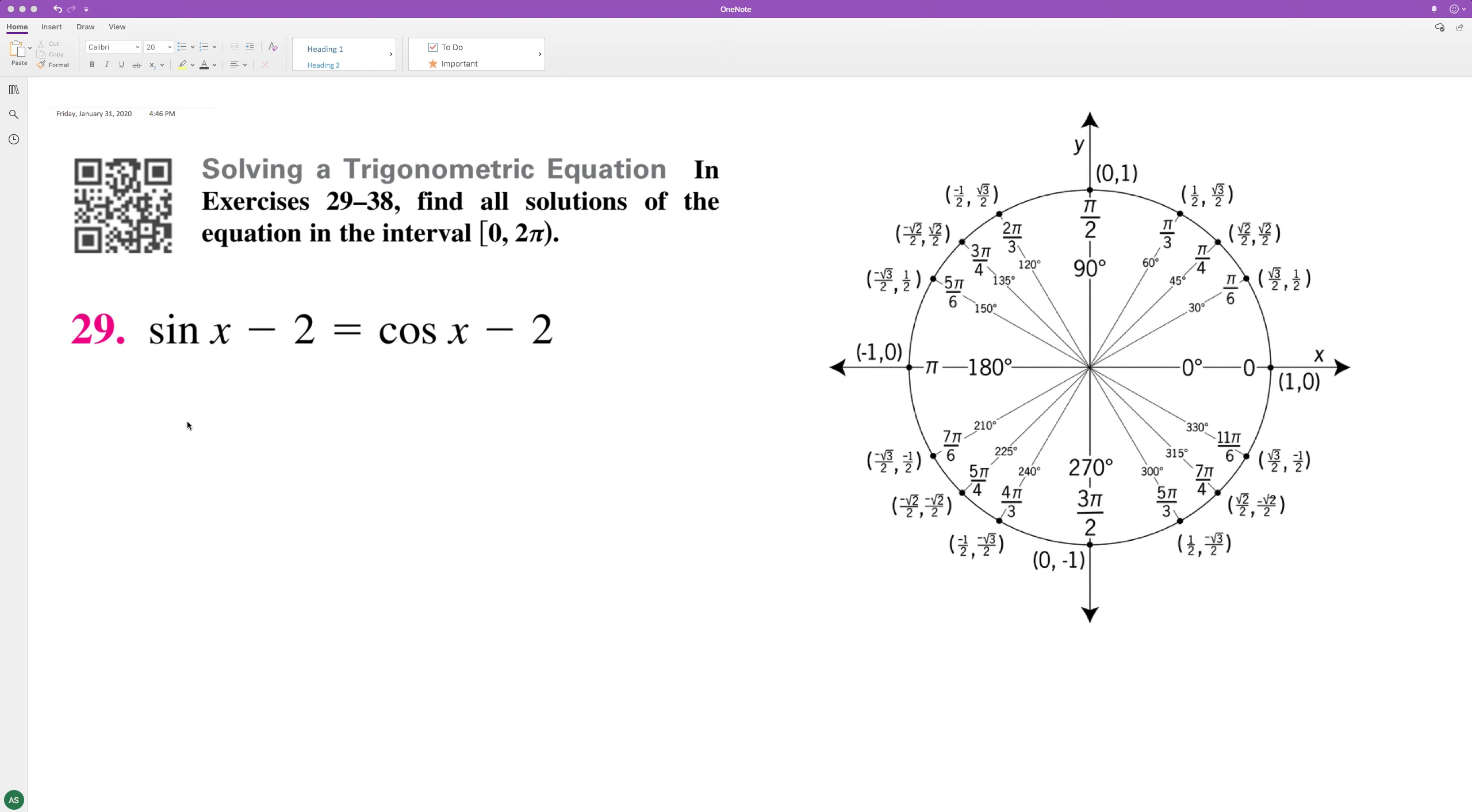To solve for x, first add 2 to both sides. These cancel each other out, so basically it's just sin x equals cos x.